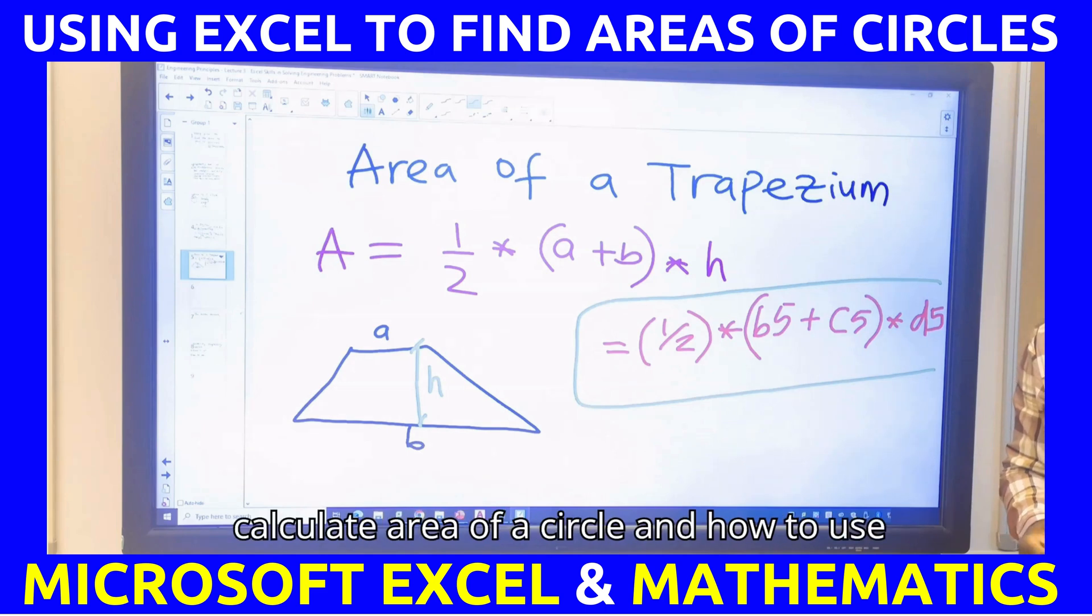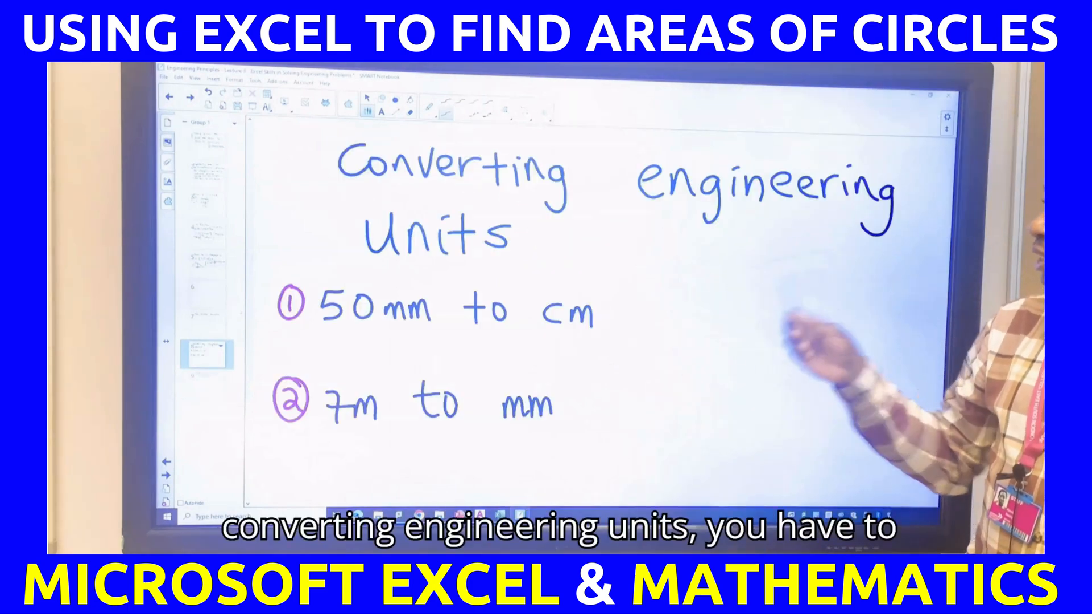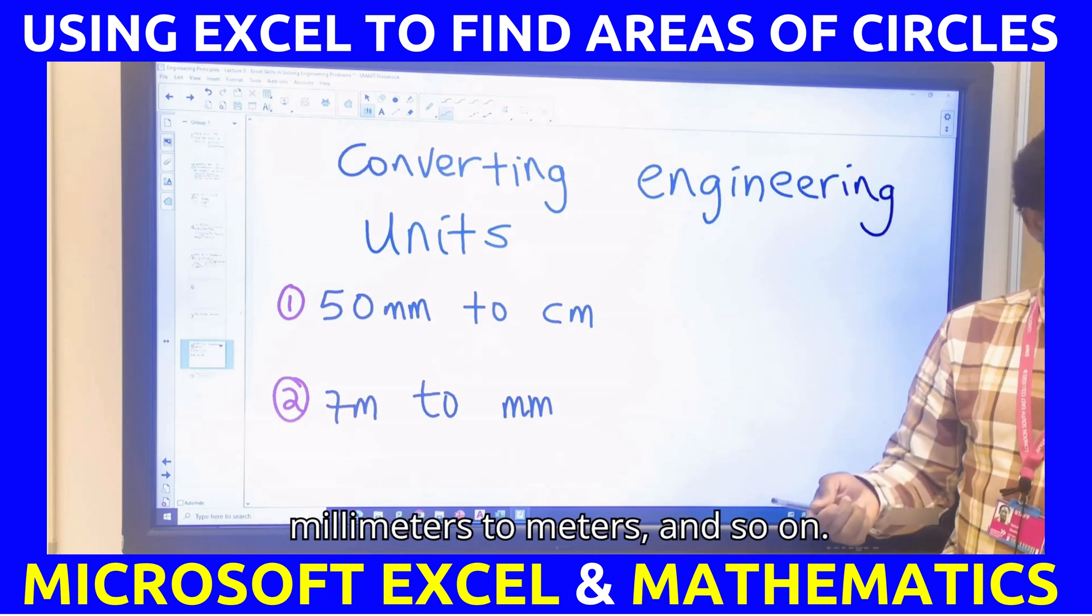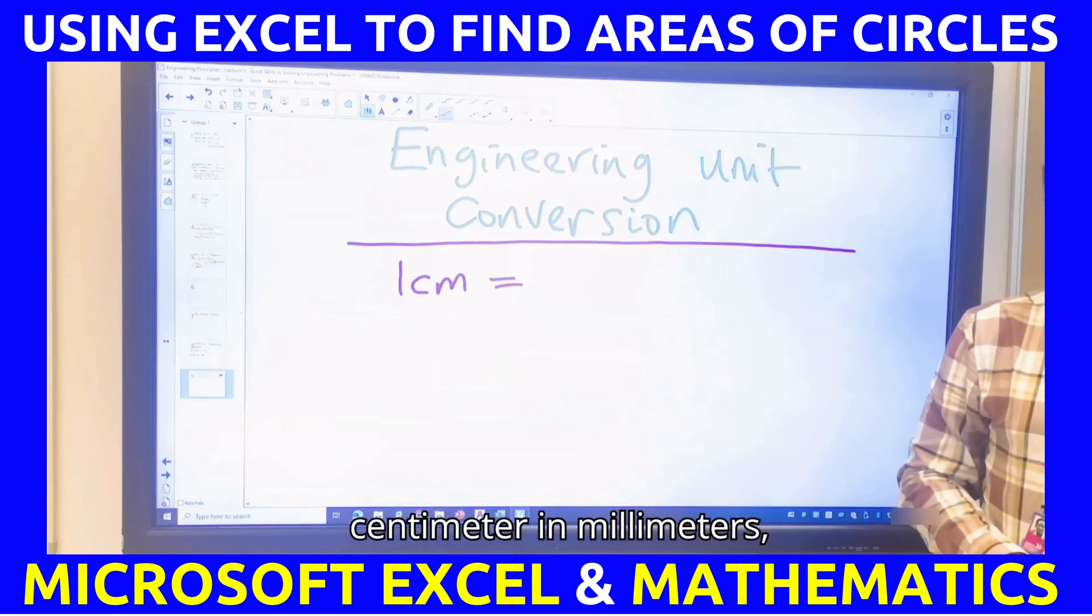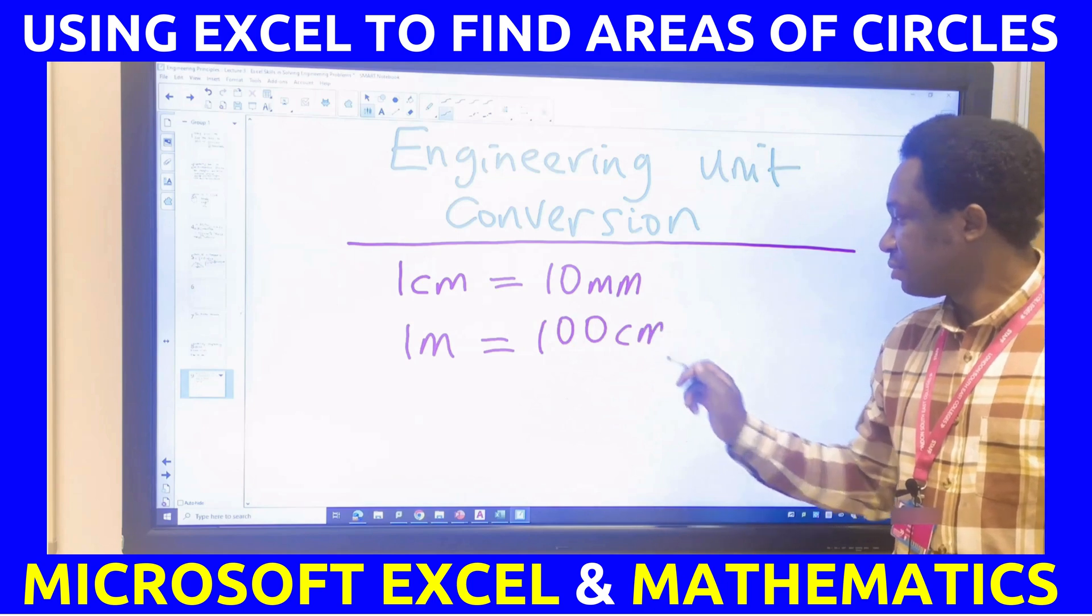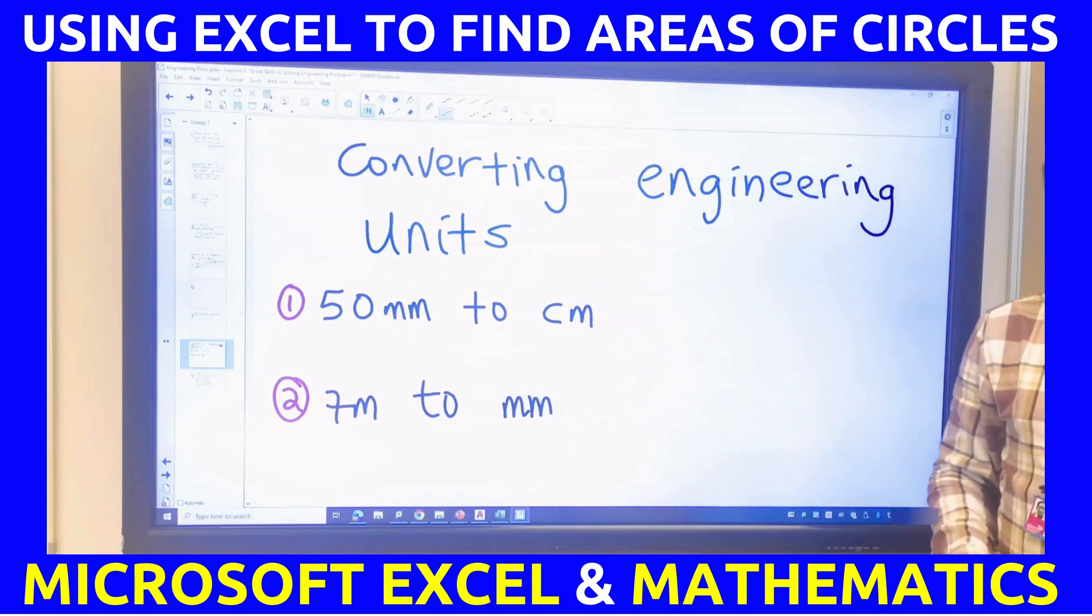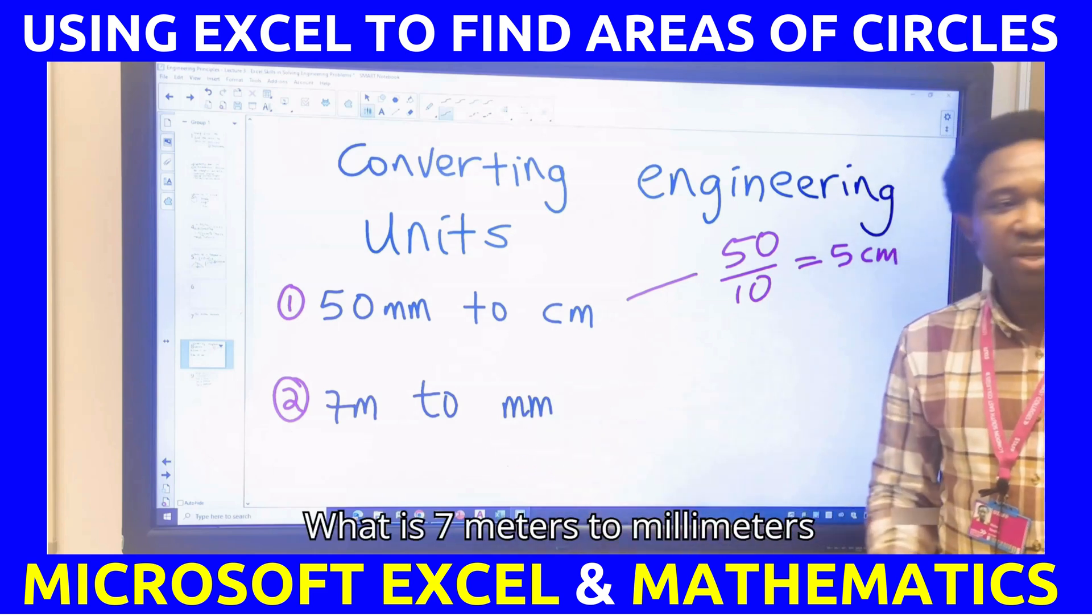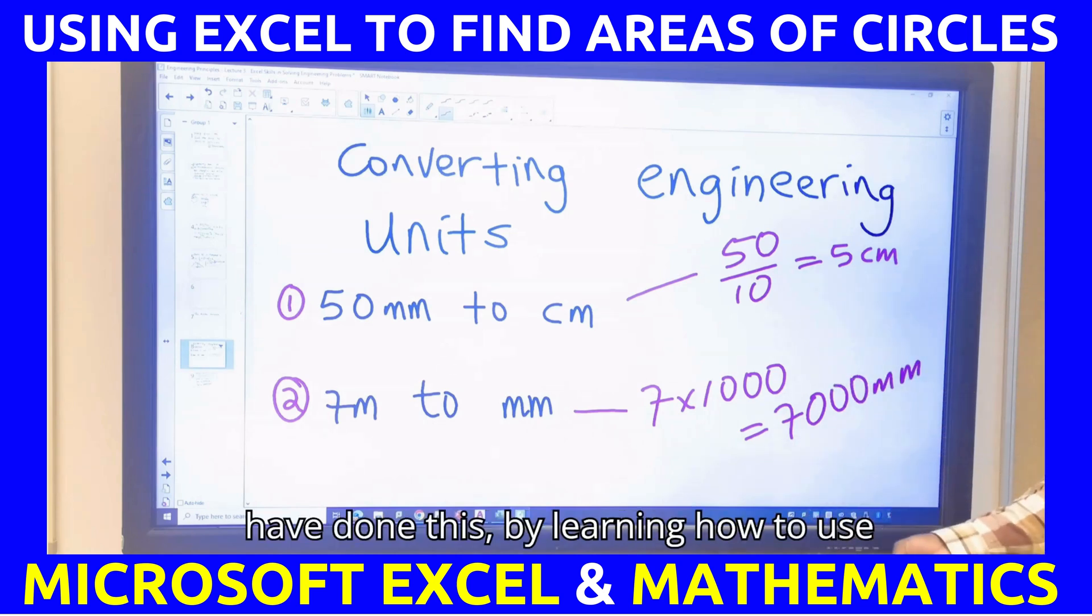Now, we know how to calculate area of a circle and how to use it in Excel. The next thing we want to learn now is conversion. In engineering conversion, converting engineering units. You have to learn how to convert cm, centimeters to millimeters, meters to millimeters, millimeters to meters, and so on. What is 1 centimeter in millimeters? 10 millimeters. What is 1 meter in centimeters? 100 cm. What is 1 meter in millimeters? 1000. With this, what is 50 millimeters to cm? 5. How did you get it? 50 divided by 10. It will give you 5 cm. What is 7 meters to millimeters? 7,000. It will give you 7 times 1,000. So, you now have 7,000 millimeters.